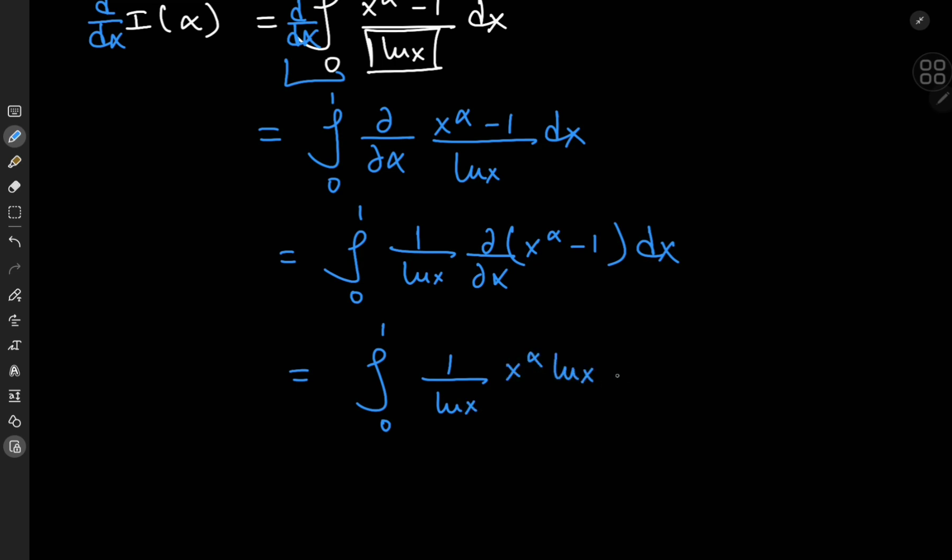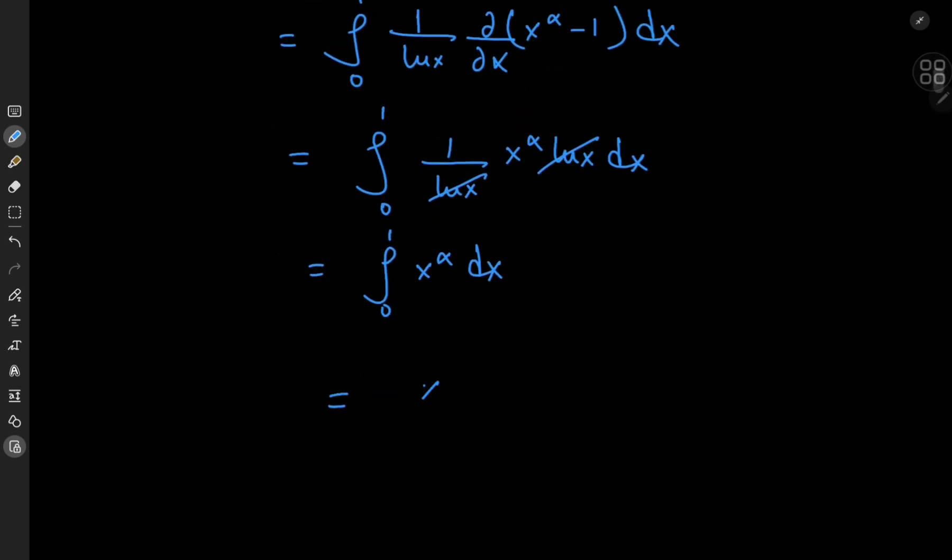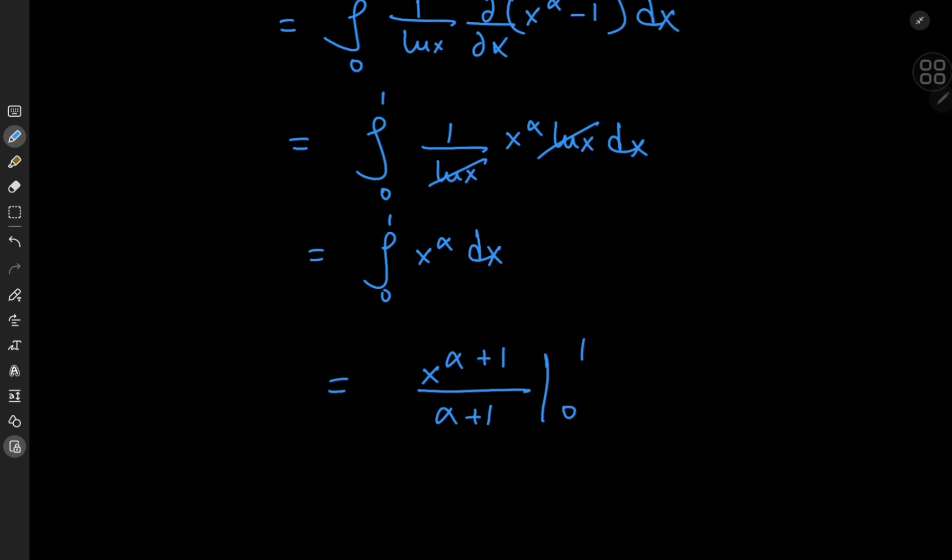So that means we have the integral from 0 to 1 of 1 by log x times x to the alpha times log x dx, where the logarithm terms cancel out, and we're left with this friendly little integral of x to the alpha dx, which is very easy to solve. We just apply the power rule, and we have x to the alpha plus 1 divided by alpha plus 1, with the limits being 0 and 1.